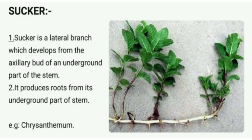Sucker is a lateral branch which develops from the axillary bud of an underground part of the stem. It produces roots from each underground part of the stem. Examples are chrysanthemum and the mint plant. If you plant a single stem of mint (Mentha), it grows into many new individual plants.